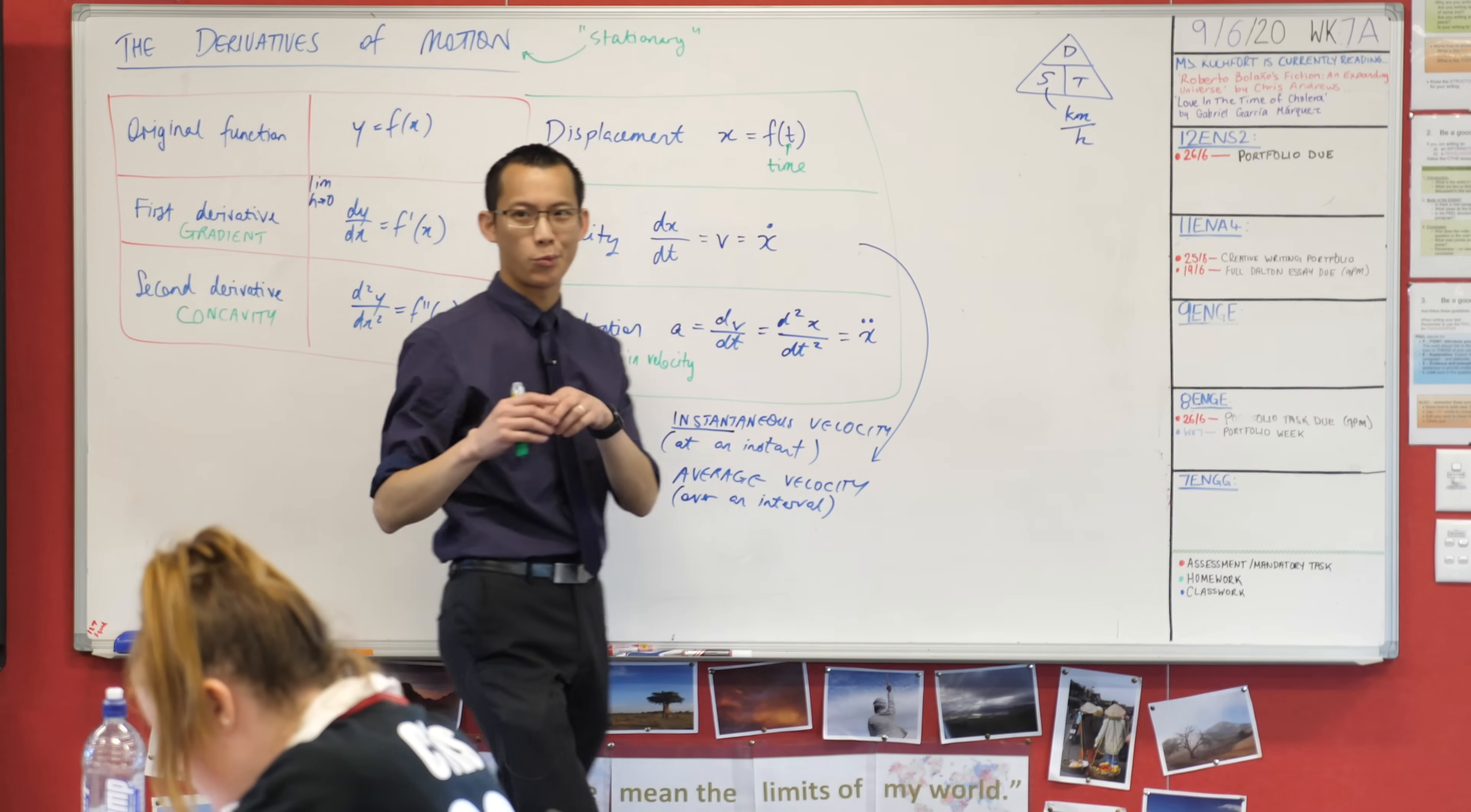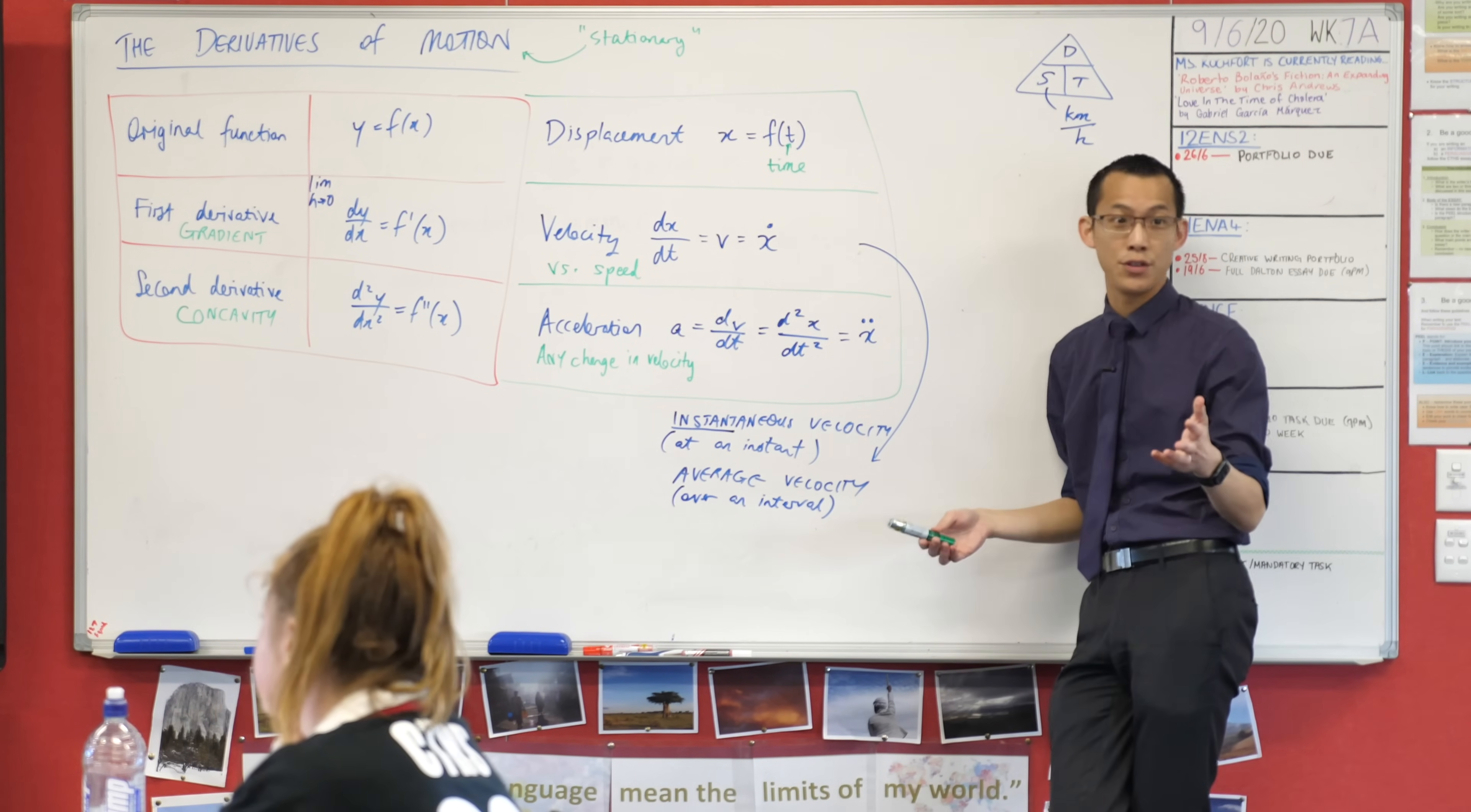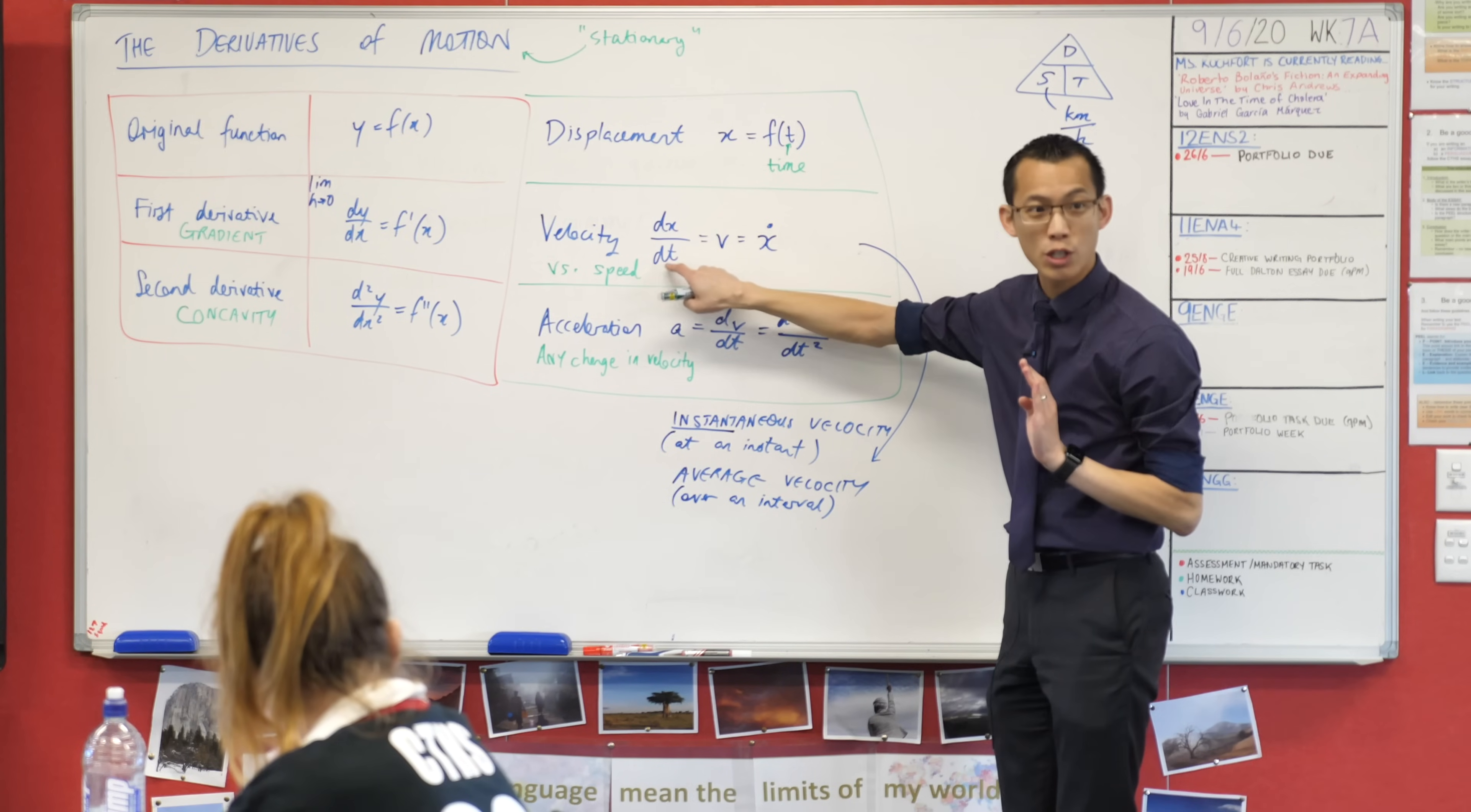Remember I said we're using the word velocity rather than speed. The difference with velocity is that just like everything else here, it includes direction. So you can have positive or negative, which might mean up and down or left and right or forward and backward, depending on the situation. When you compare that to speed - how many of you are on your L's or P's? Okay, great. You've sat in a car, you've looked at your speedometer. When you start going faster, you see the dial heading up. If you were parking and put your car into reverse, what happens to the speedometer? It still goes up - now I'm going 10 k's per hour backwards.